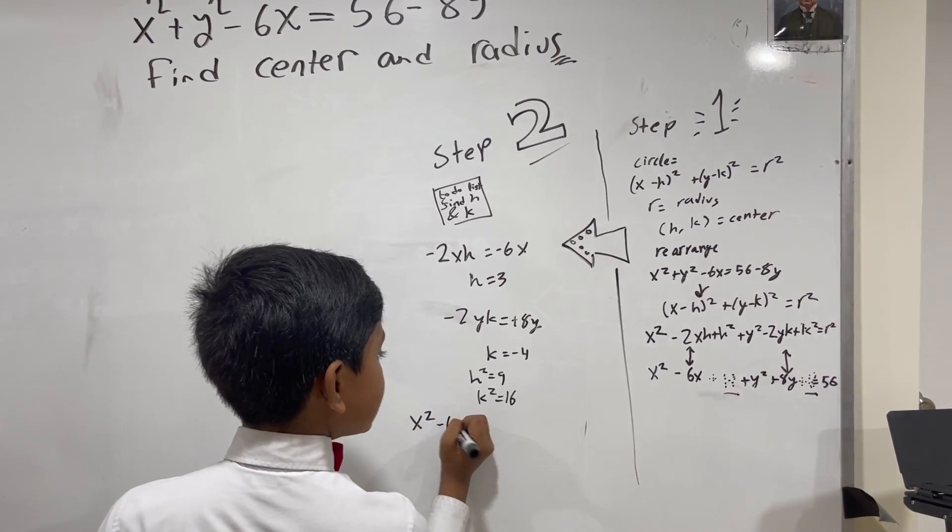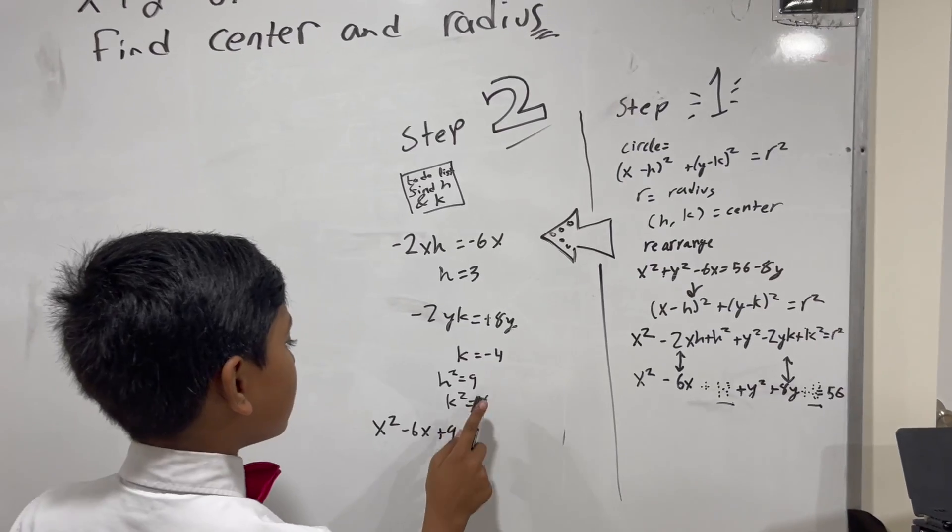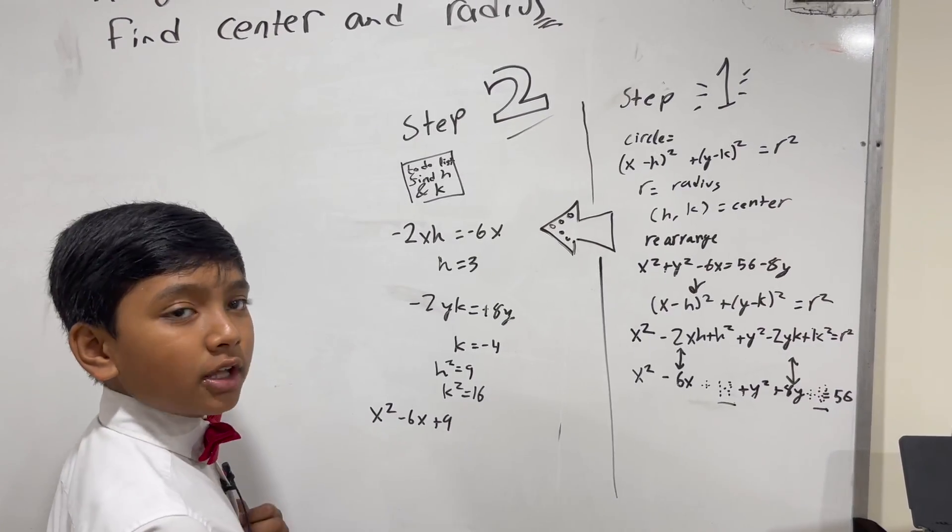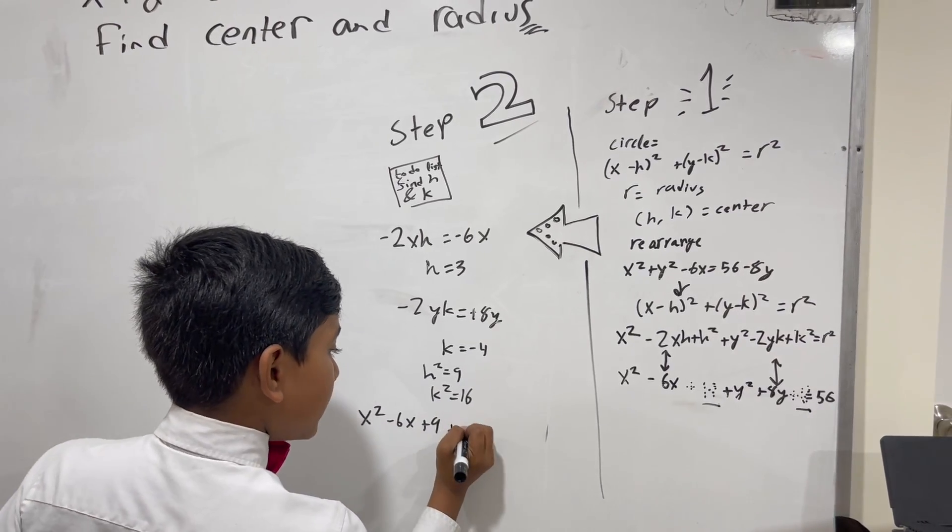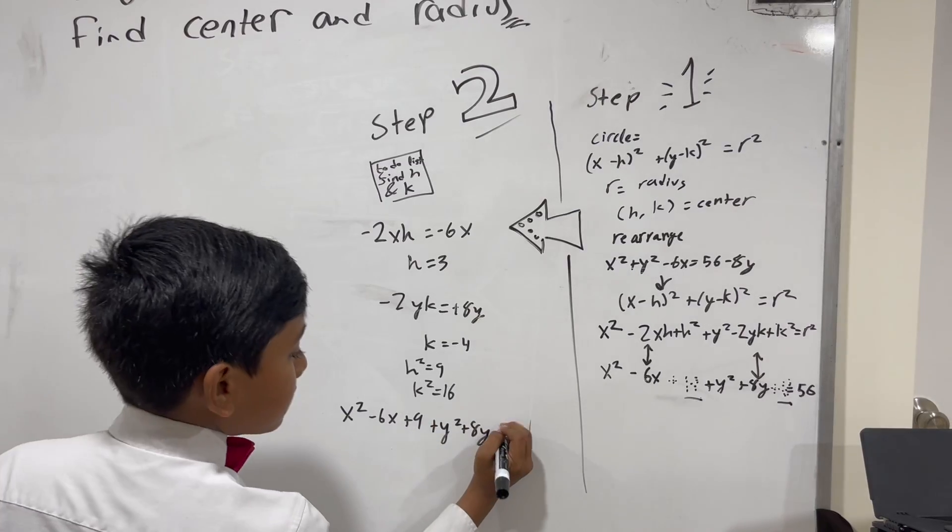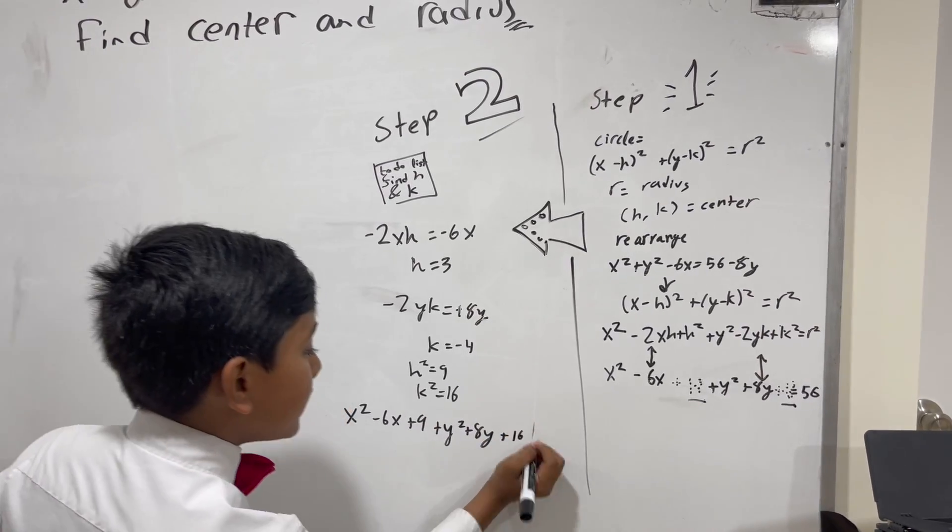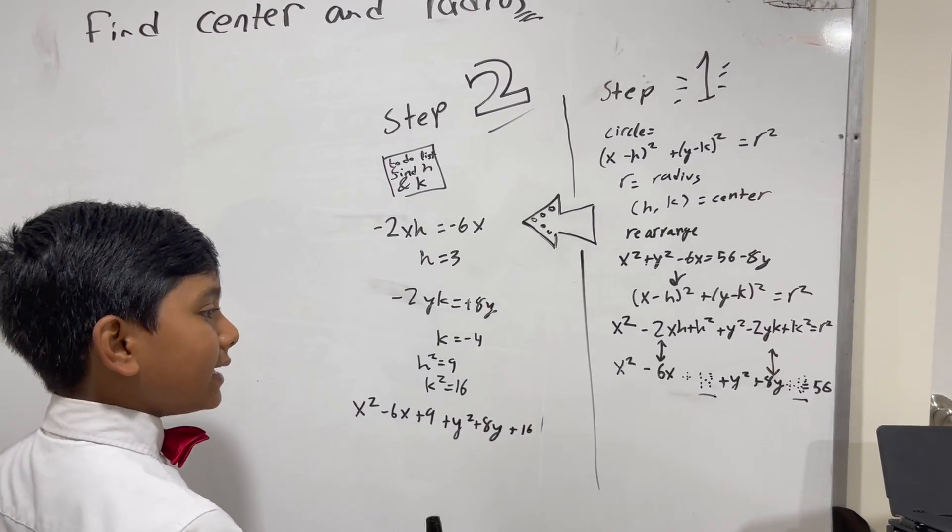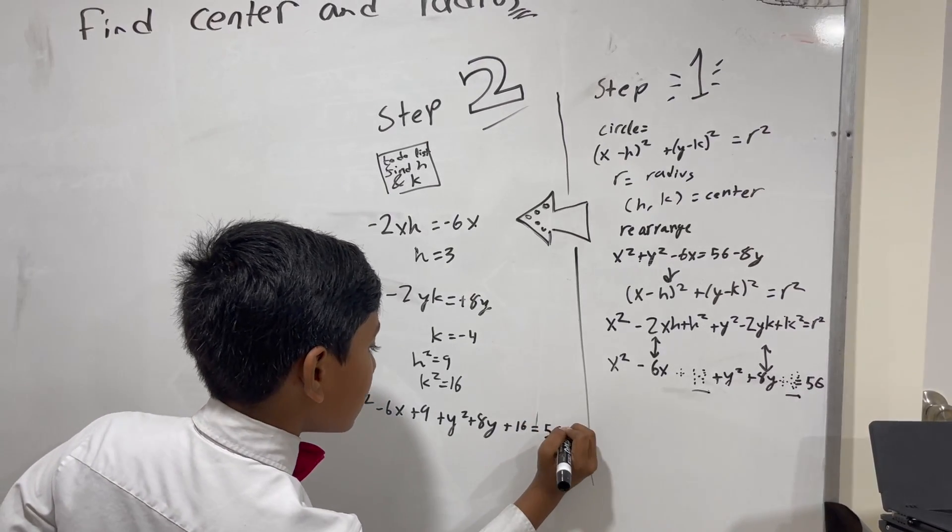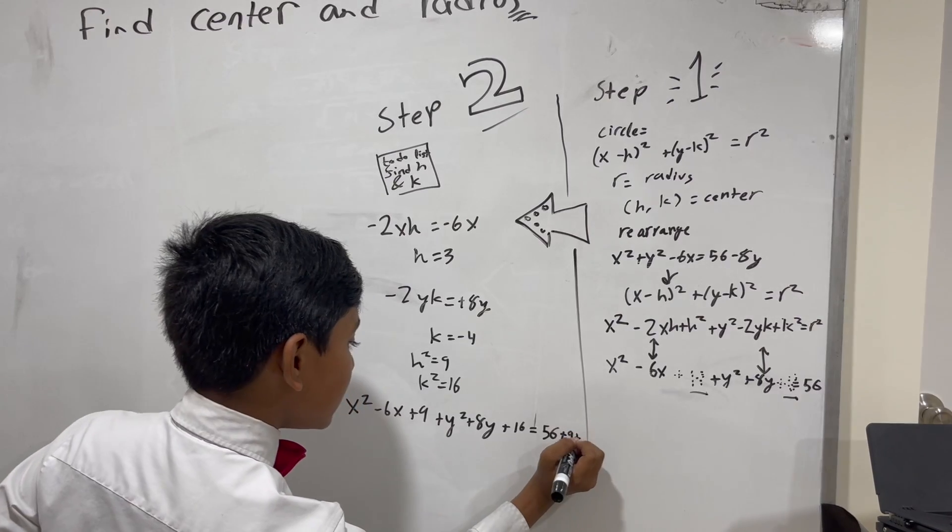So, minus 6X plus 9 to complete the square. Plus Y squared plus 8Y, and then to complete this square, we get K squared, 16. And, that's equal to 56 plus 9 plus 16.